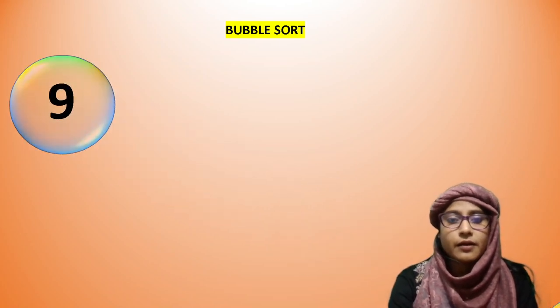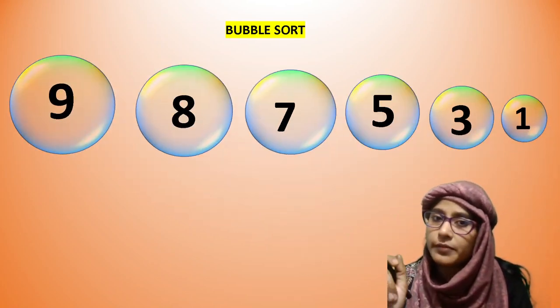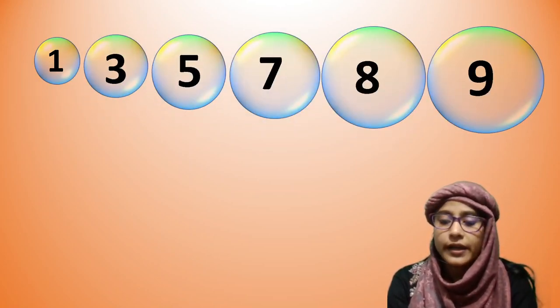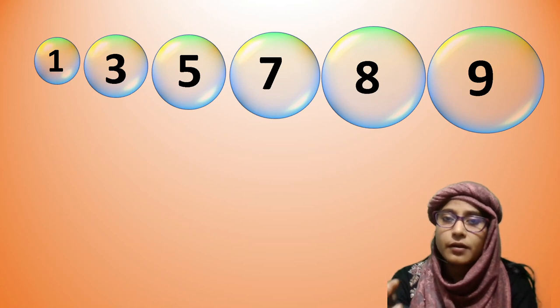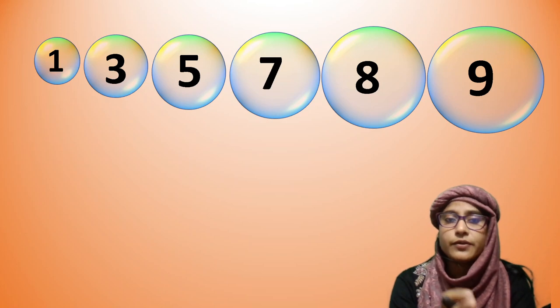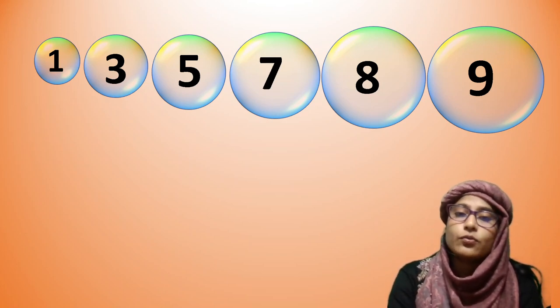So you can see bubble sort — what are we doing in bubble sort? Our array is given as 9, 8, 7, 5, 3, 1 — all in descending order. We need to arrange this in ascending order using bubble sort, so the result will be 1, 3, 5, 7, 8, 9. The biggest element, 9, will be kept at the back.